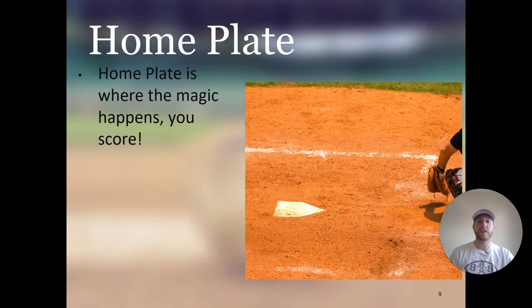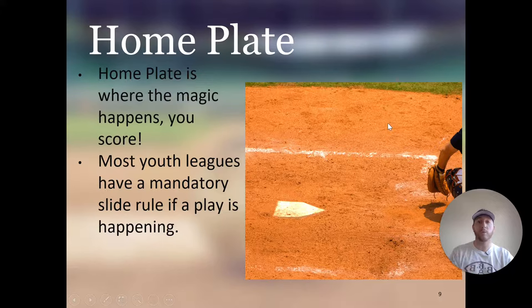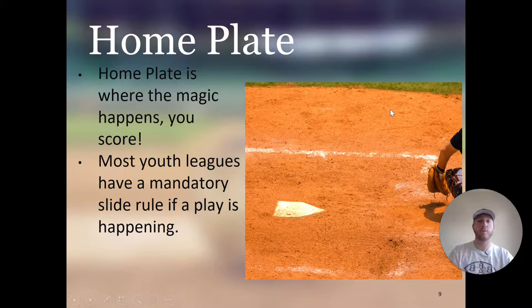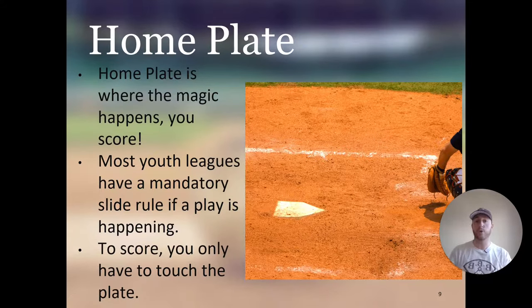Home plate is where the magic happens — you score. Most youth leagues have a mandatory slide rule if a play is happening at the plate. If there's no play, you don't have to slide, but if there is a play, most youth leagues require you to slide. To score, you only have to touch the plate — you can run straight through. As long as you touch home plate with any part of your body, you score. That's a run.